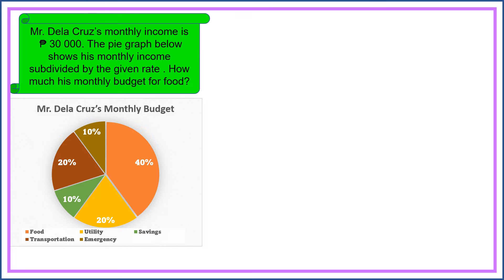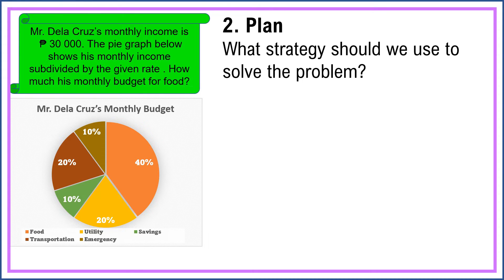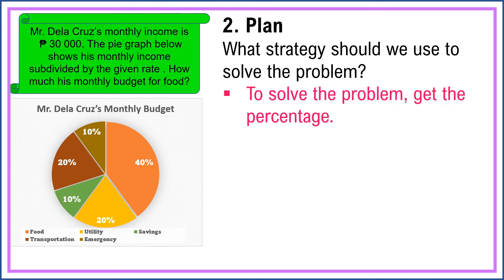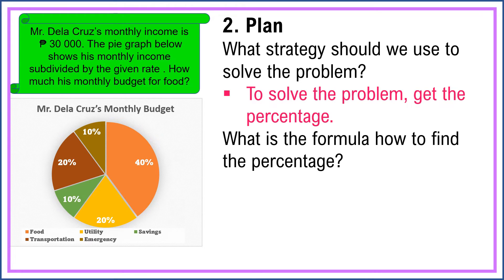The next step is we're going to make a plan. What strategy should we use to solve the problem? To solve the problem, we get the percentage. What is the formula to find the percentage? The formula is: Percentage is equal to Rate times Base.